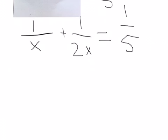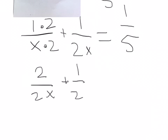So if I scroll down, we have to simplify this. So simplify the denominator. We multiply the top and the bottom by two, and then we have two over two X plus one over two X equals one-fifth.